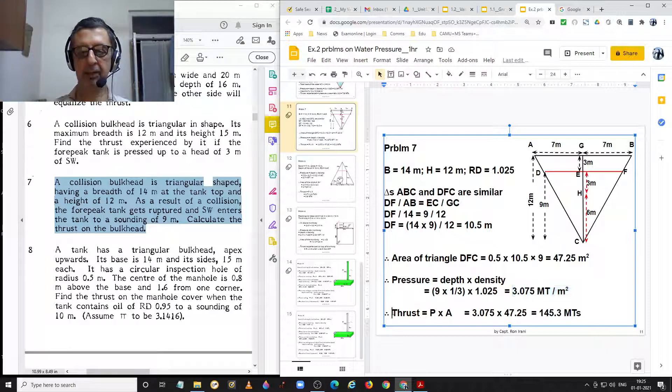Thrust, we know, is equal to pressure into area, that is 3.075 into the area which we have calculated above, equal to 47.25, giving the thrust equal to 145.3 metric tons.